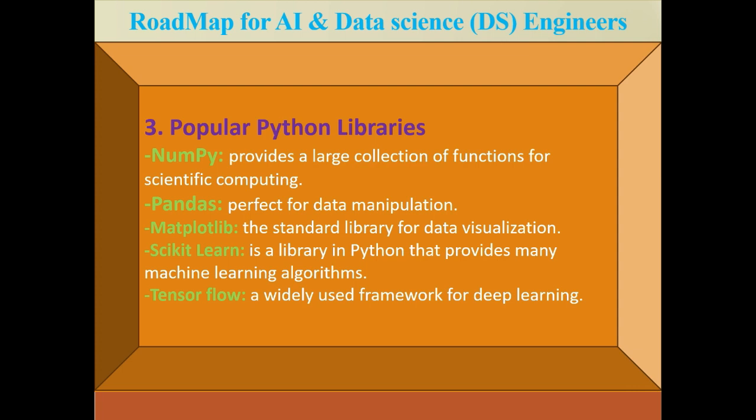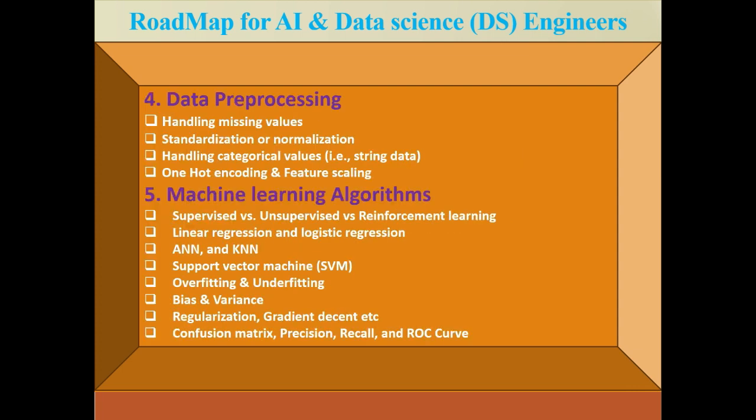So Pandas is required for data manipulation while Matplotlib is required for data visualization. Next is Scikit-learn — a Python library that provides many machine learning algorithms. Without Scikit-learn it is very difficult to build machine learning models; with it, building models becomes very easy. The next library is TensorFlow, which is the widely used framework for deep learning.